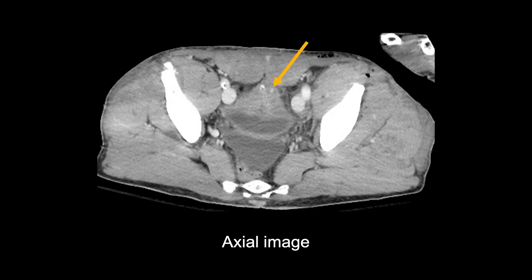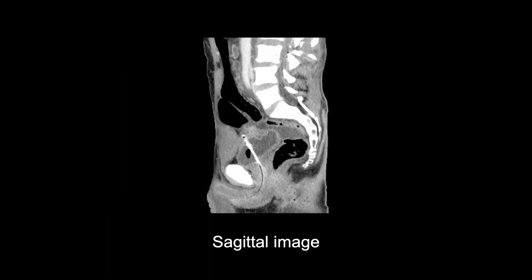In this case, there is unexplained free water density fluid of 15 Hounsfield units in the pelvis, raising suspicion of a bladder injury. The trauma CT sagittal image shows some thickening of the bladder dome, which increases our suspicion of an injury.